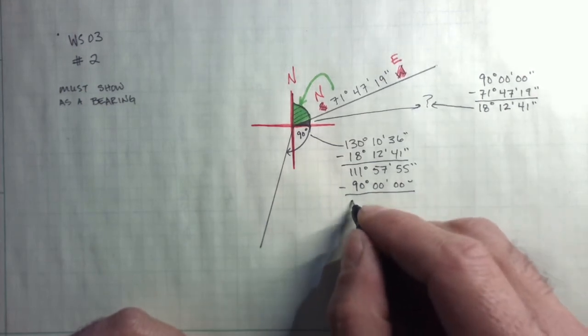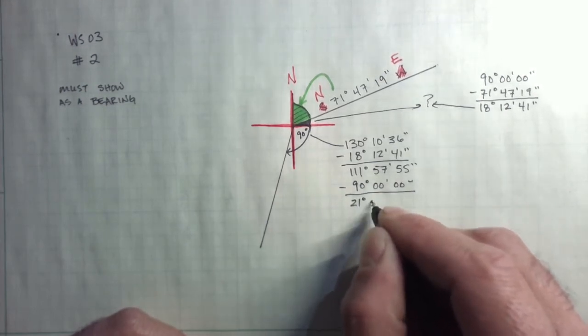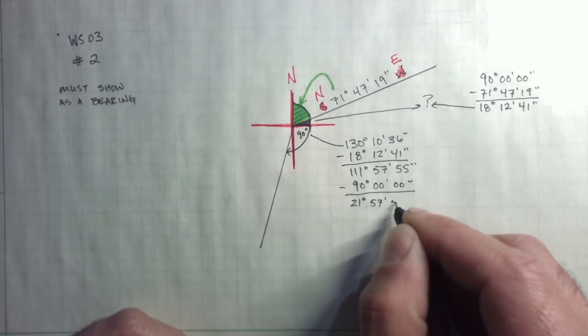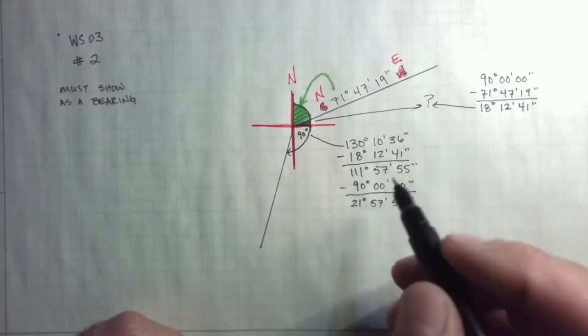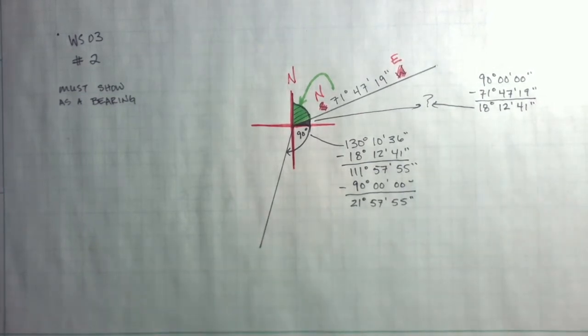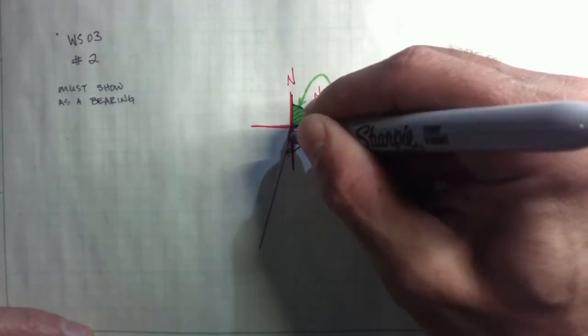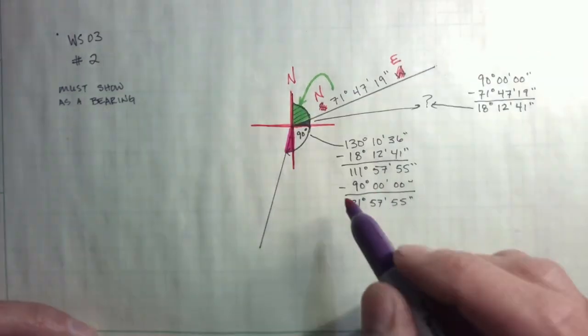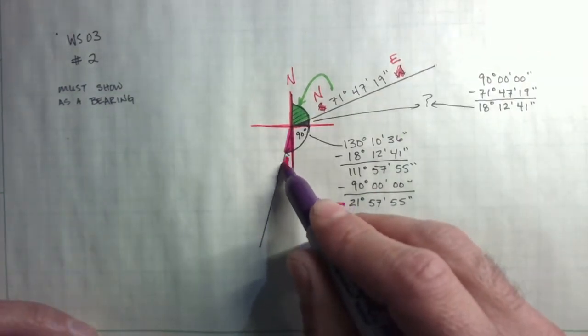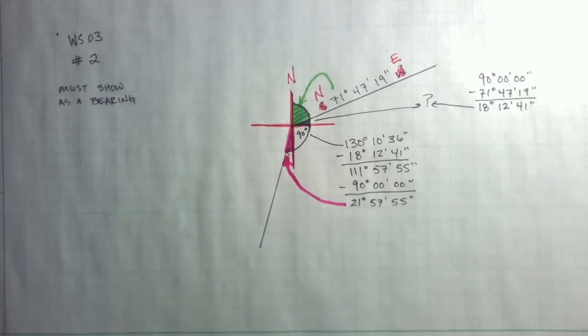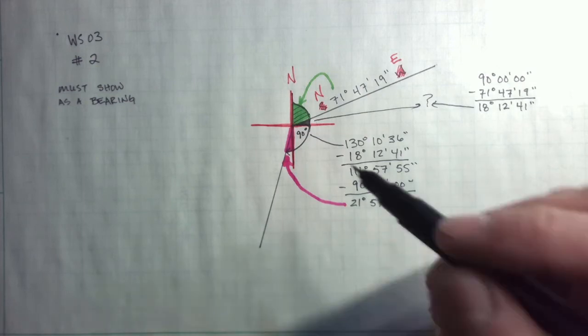And what am I left with? I'm left with 21 degrees, 57 minutes, 55 seconds. And what is that? That is this last sliver of the pie. So we'll do it in purple here.